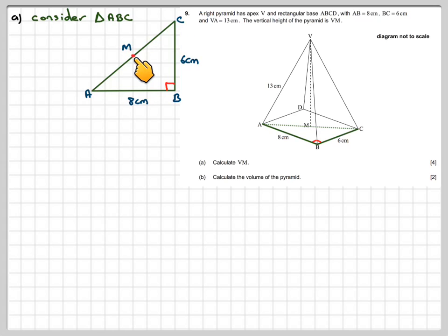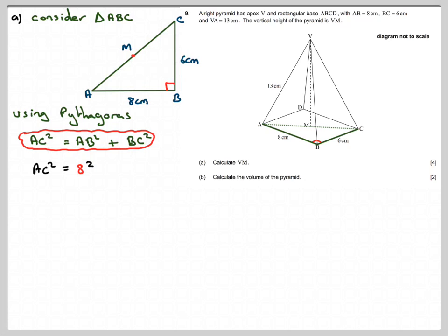We have to remember that M is the midpoint of AC. Using Pythagoras, AC squared is equal to AB squared plus BC squared, so AC squared is going to be 8 squared plus 6 squared, which is 64 plus 36, which equals 100. AC is 10 centimetres, so that length there is 10 centimetres. Half of it is going to be 5 centimetres.